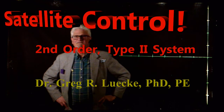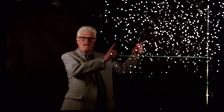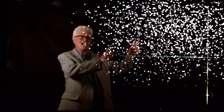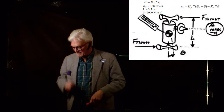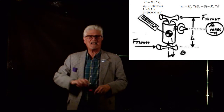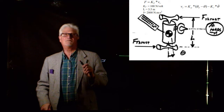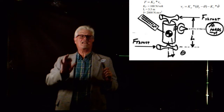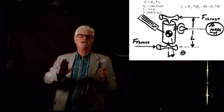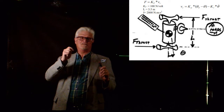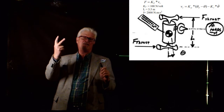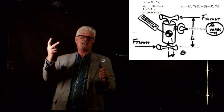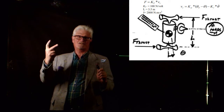Hello to you all. We're going to try the satellite problem right up here, and we're going to see if we can design a controller for a satellite problem. It's a special kind of problem — there's no damping in this one. It's got two free integrators in it, so it's a type 2 system, and it's a second-order system.